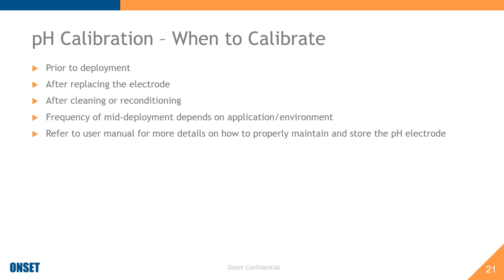You should always calibrate prior to deployment, especially with a new electrode or after long-term storage. After replacing an electrode, you'll have to calibrate. After cleaning or reconditioning the electrode, you'll want to recalibrate. During mid-deployment, the frequency of calibrations depends on the application and environment. Our Hobo Mobile and Hobo Connect software will prompt users to calibrate when first setting up a logger, and if it's been more than seven days since the last calibration, it will prompt you to calibrate — not required, but it will prompt you.